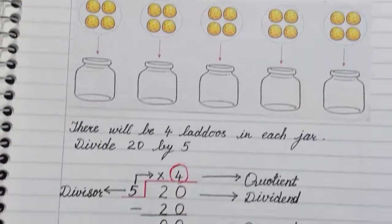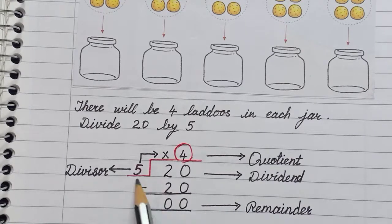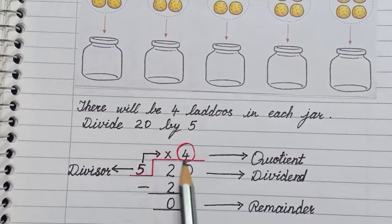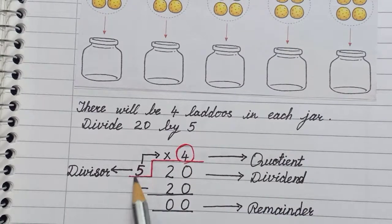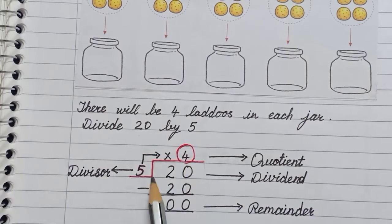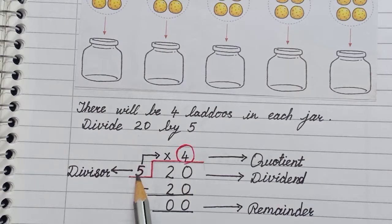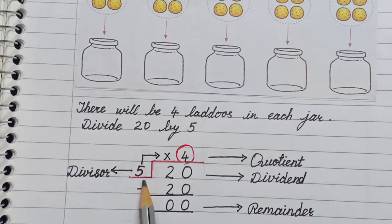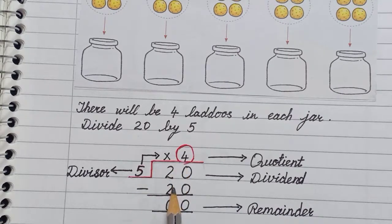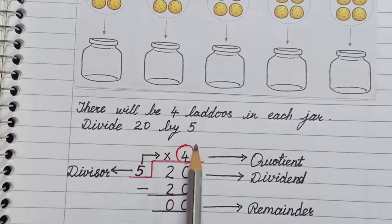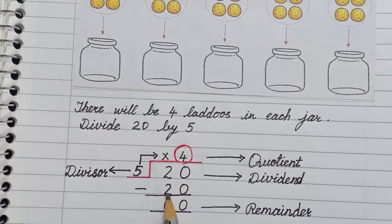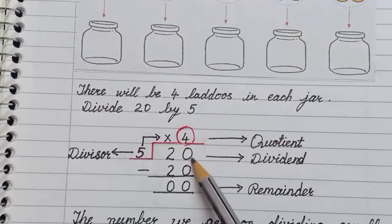So 4 laddos in each jar means we divided 20 laddos into 5 jars, that is 20 divided by 5. Let's see how we write this: make a line like this, and 5 is written outside. Think of it as a house — 20 is sitting inside the house, and 5 is at the door knocking. How many times will he knock until he gets 20? 5 fours are 20, so we write the answer on top — the terrace. So 5 fours are 20, and you subtract: 20 minus 20 is 0.